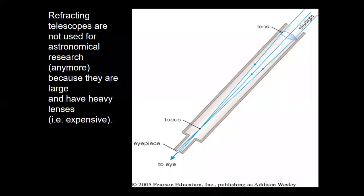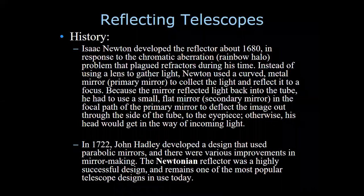Refracting telescopes are not used for astronomical research anymore because they have large, heavy lenses. Reflecting telescopes are widely used these days. Isaac Newton developed the reflector around 1680 in response to chromatic aberration — what we call a rainbow halo — which is a problem that occurs when using lenses.